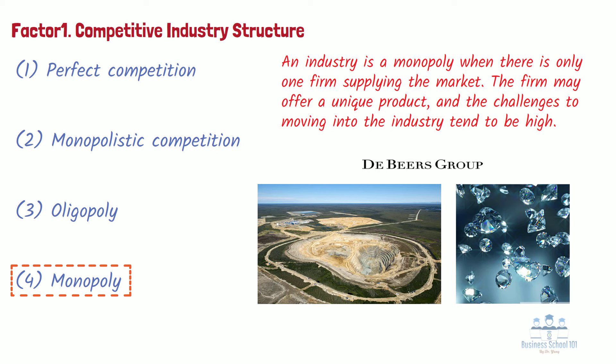De Beers also purchased and stockpiled diamonds produced by other manufacturers in order to control prices through supply. The De Beers model changed at the turn of the 21st century, when diamond producers from Russia, Canada, and Australia started to distribute diamonds outside of De Beers' channel.